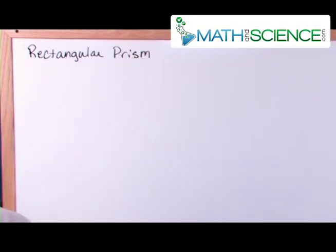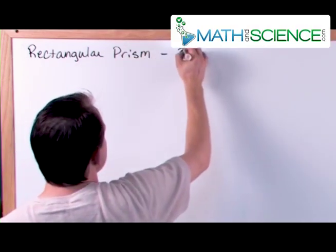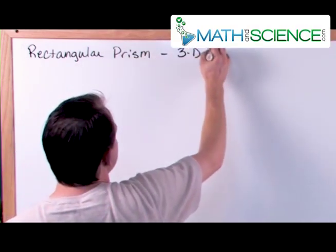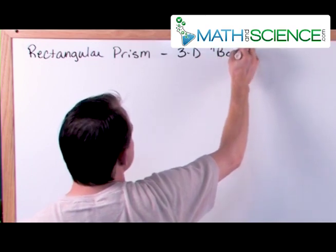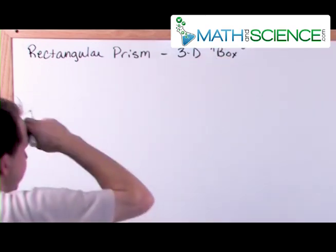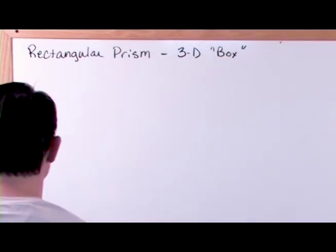Rectangular prism. Basically, you can think of it as a 3D box — some sort of rectangular shaped three-dimensional box.